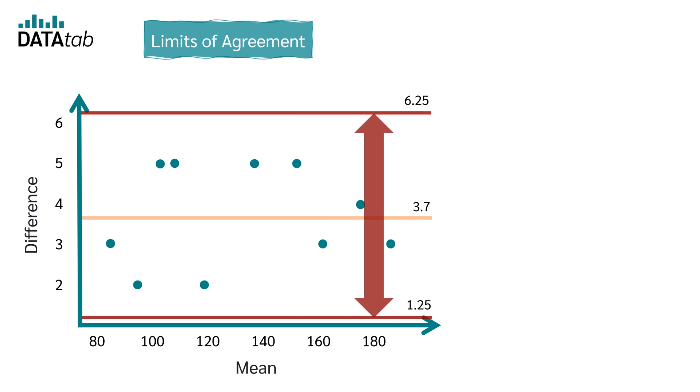Limits of agreement. The limits of agreement give the 95% confidence interval of the differences between the measurements. They are crucial for understanding the variability of the differences.